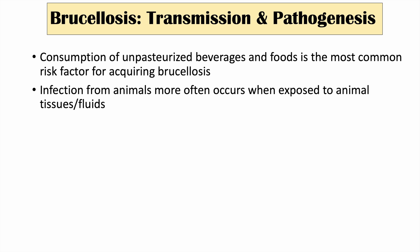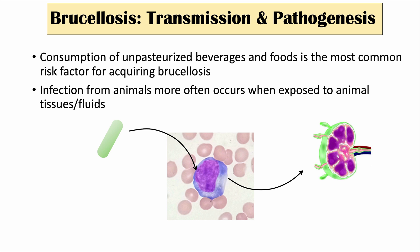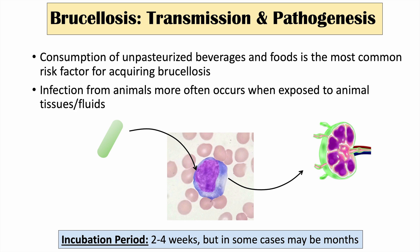Infection from animals more often occurs when exposed to animal tissues and fluids — for example, a farmer exposed to an animal giving birth. When an individual is exposed to Brucella bacteria, the bacteria is phagocytized by immune cells, usually macrophages, in the gastrointestinal tract or gastrointestinal mucosa. It has a relatively slow incubation period — typically two to four weeks — though in some cases it can take months.